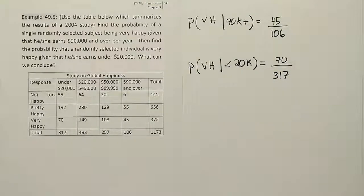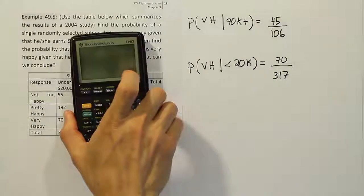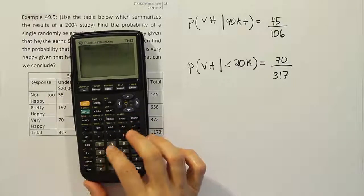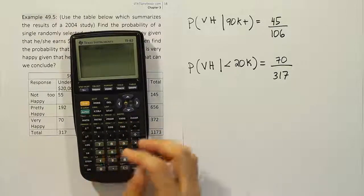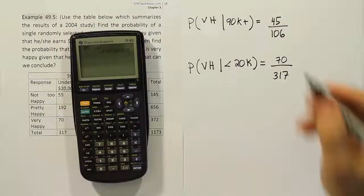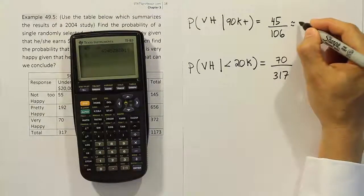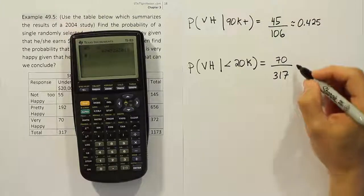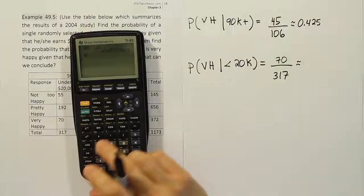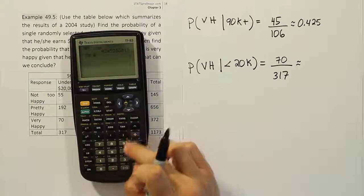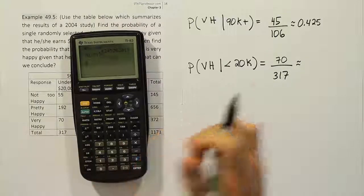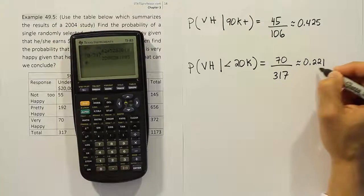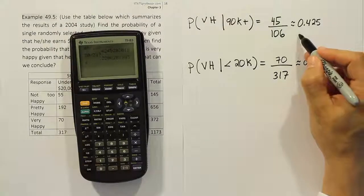Let's get the decimals and make a comparison. We have 45 divided by 106, and when we do that, we get the answer approximately 0.425 or 42.5%. Now, 70 divided by 317, and you can see we get 0.221 or 22.1%.